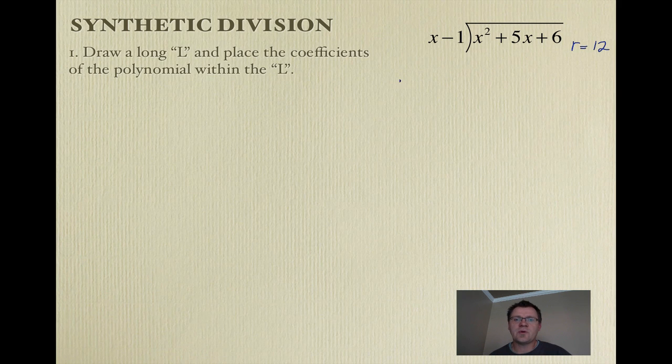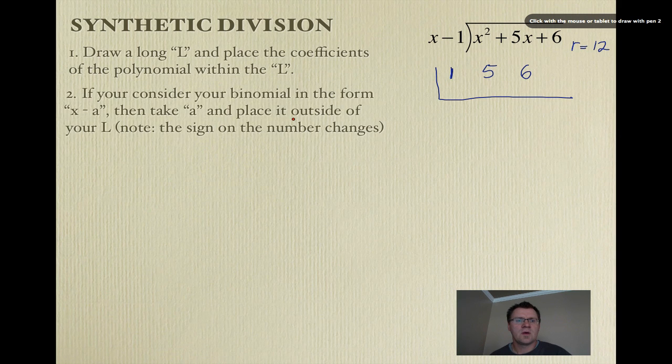So, let's see if we can get to the same thing. The first thing we're going to do is we're going to draw a long L. And we're going to place the coefficients of the polynomial within the L. So, all that means is we're going to draw an L like this. And we're going to take the coefficients of the polynomial. So, there's a 1, there's a 5, and there's a 6. Now, if you consider your binomial in the form of x minus a, so here we have x minus 1, we're going to take a and place it outside of your L. Note that we have to change the sign of the number. So, this negative 1 now becomes a positive 1.